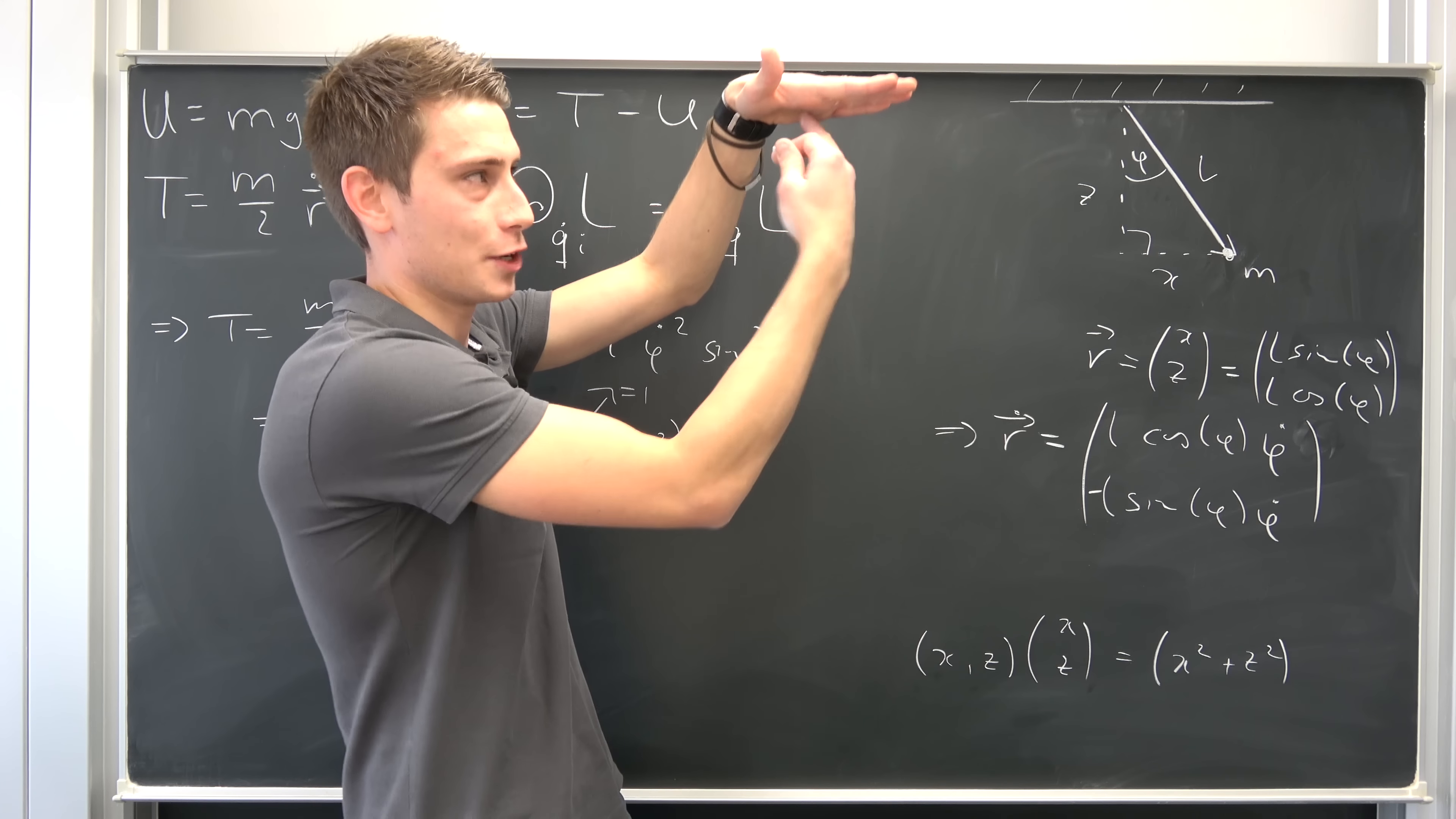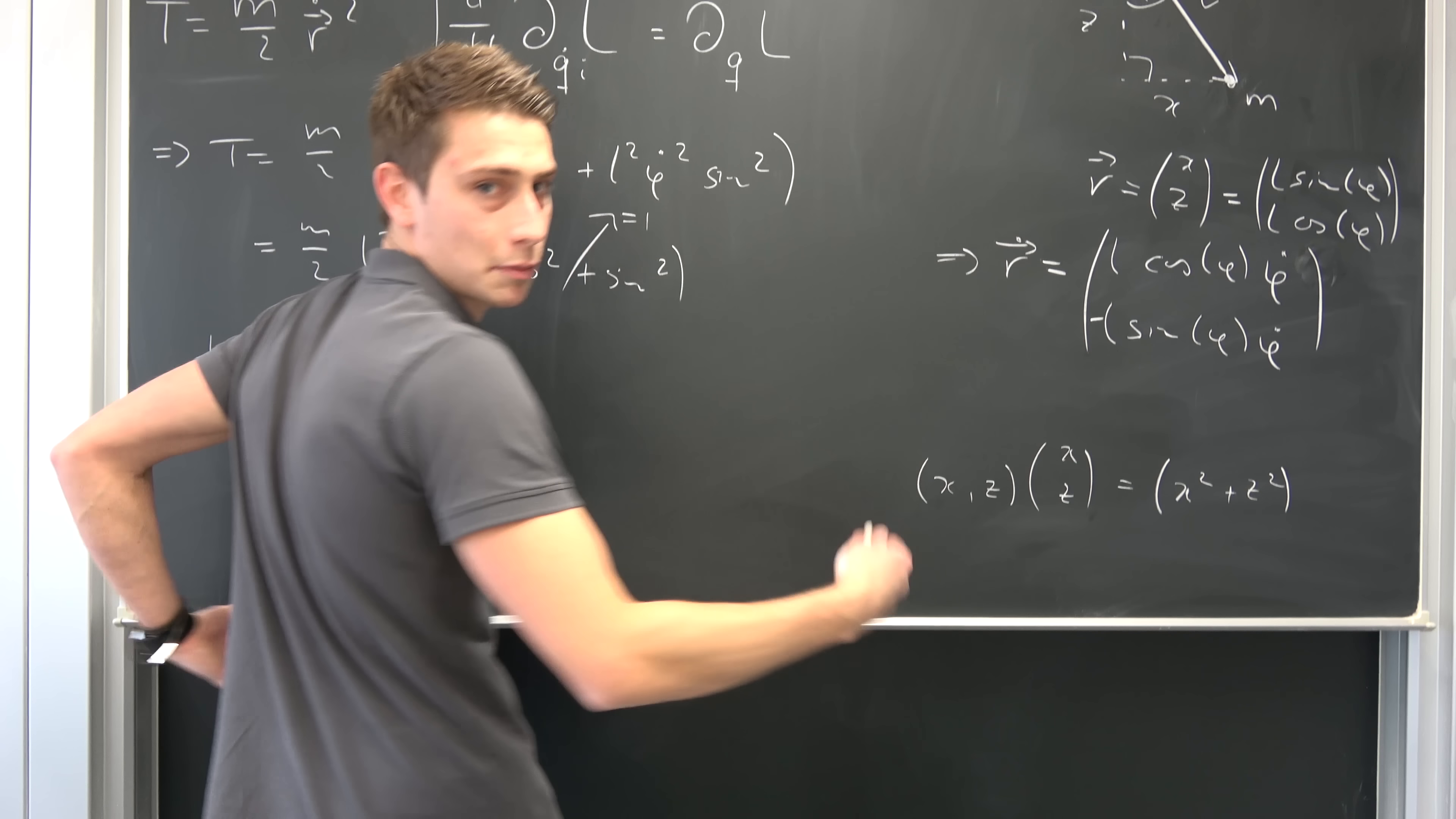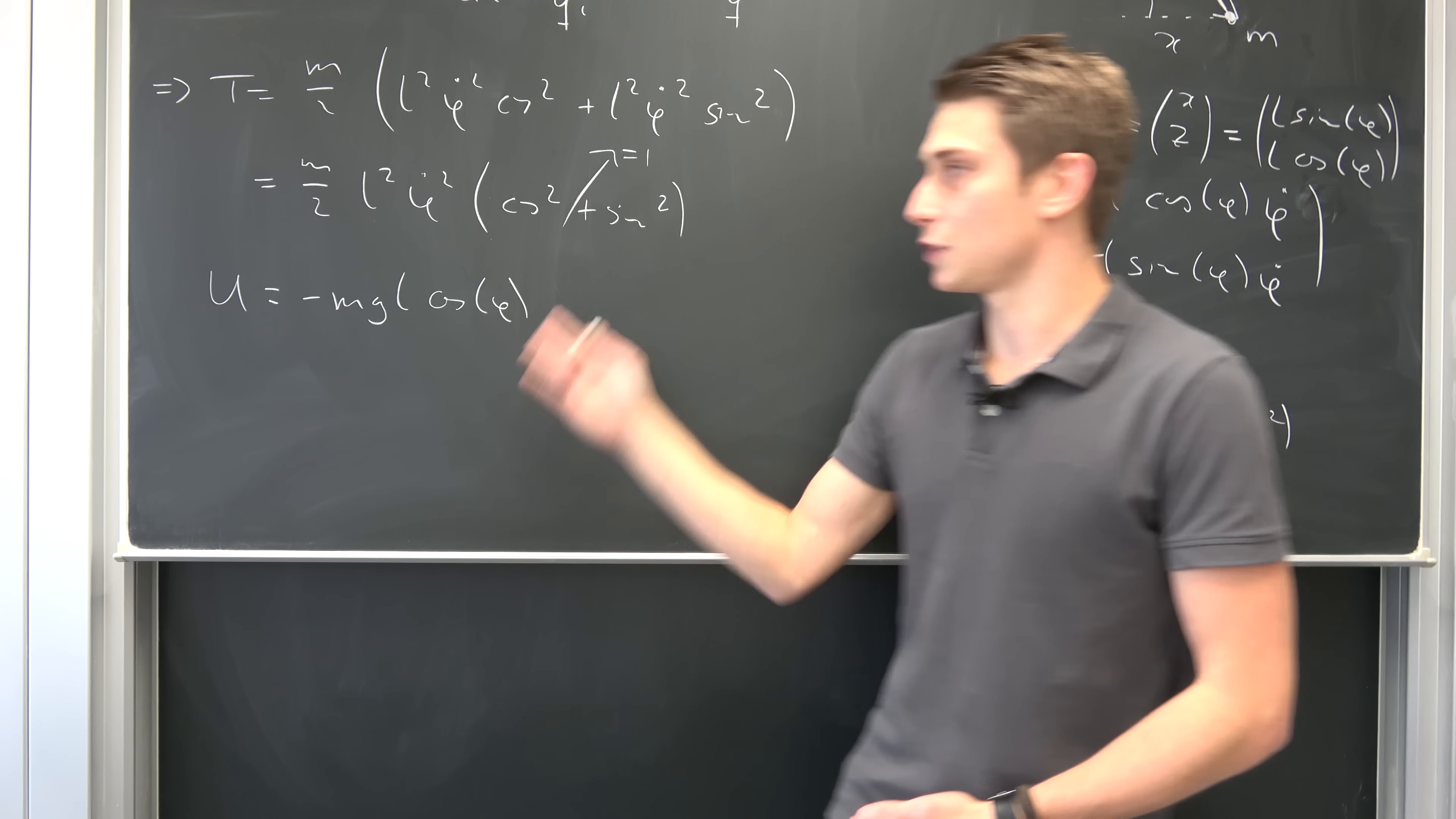So we have to take negative the z coordinate. Just think about it. It's like we have placed this pendulum underground. So our U is now nothing but M times gravitational acceleration times negative the z coordinate. So we have negative M times G times L times the cosine of phi. And there we go, with this out of the way, we can actually construct our Lagrangian.